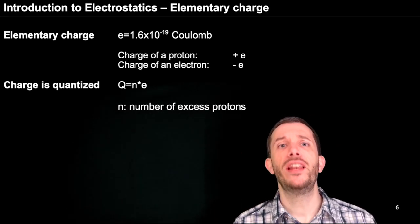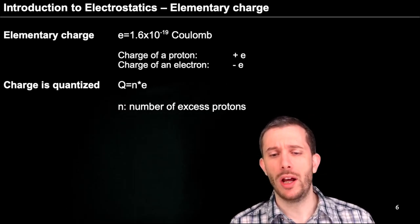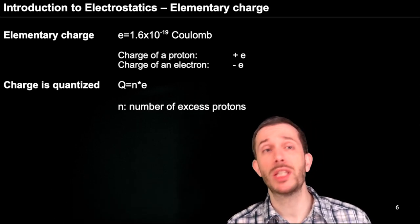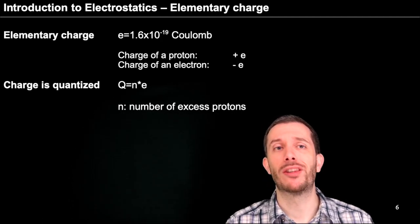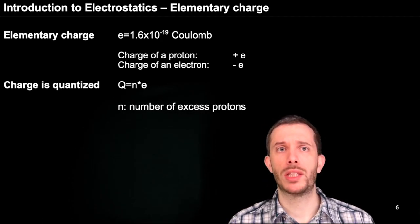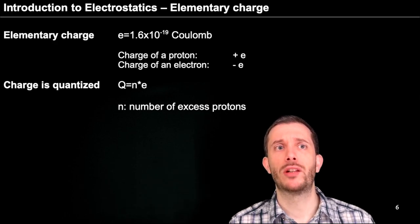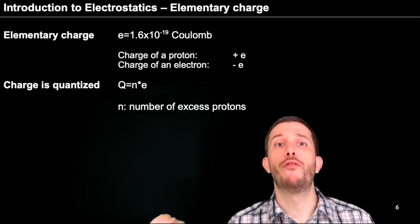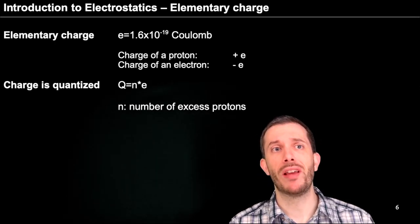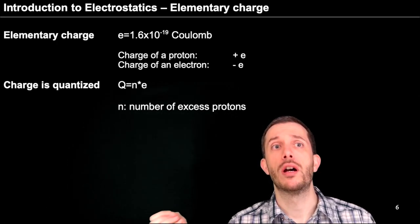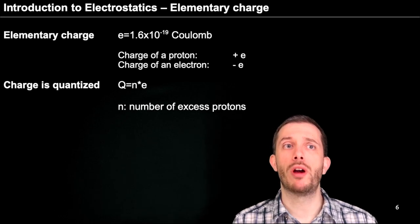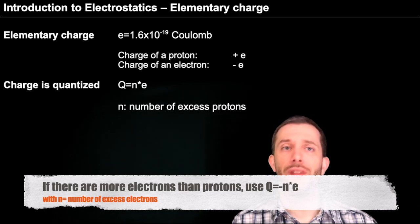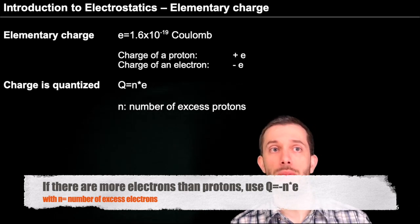This means we cannot just have any value, our charge has to be a multiple of the elementary charge. It is impossible to charge an object to 1.3 times 10 to minus 19 coulombs because that would mean we would split an electron or a proton in parts. We can only have full protons or full electrons. So charge is quantized and the overall charge should be the number of excess protons times the elementary charge or the number of excess electrons times the elementary charge.